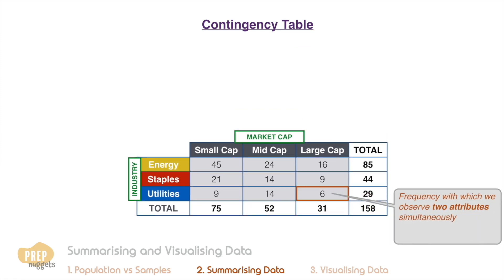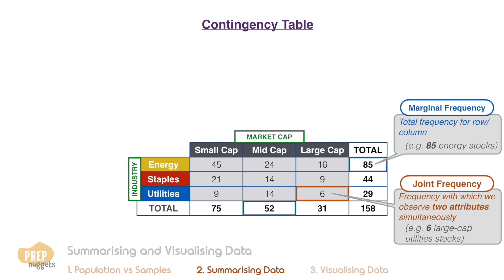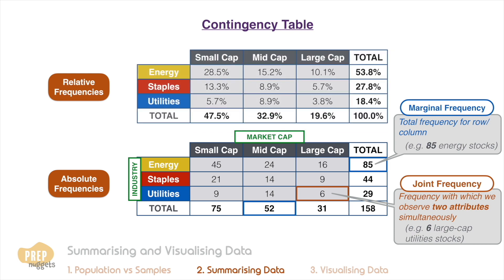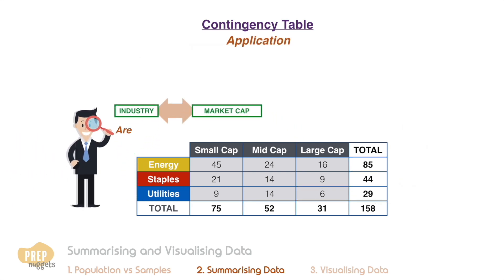The data in each cell shows the frequency with which we observe two attributes simultaneously — this is known as a joint frequency. For example, we can infer from this table that there are six large cap utility stocks in the portfolio. The total of frequencies for a row or column is termed the marginal frequency for that attribute. For example, there is a total of 85 energy stocks. A contingency table can also be expressed in terms of absolute or relative frequencies, where the sum of all observations must equal 100 percent.